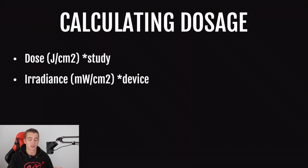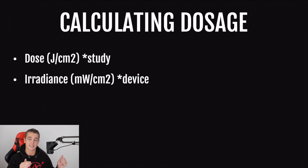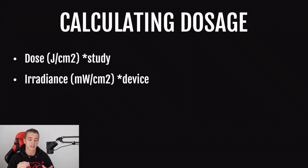The second thing you will need is the irradiance of your device. Irradiance is basically a measurement of light intensity. What's really important here is not just the value they give you, but also the distance they were away from the device when that measurement was taken. Many companies won't tell you this, which is a problem because the further away from the device you get, the lower the light intensity. A lot of companies with underpowered devices will say something like 100 milliwatts per centimeter squared without telling you how far away they were. So make sure you find out from the company at what distance that irradiance measurement was taken.